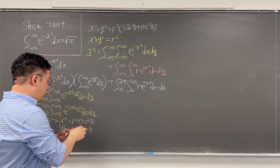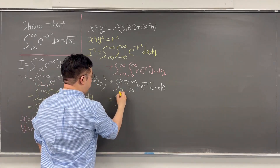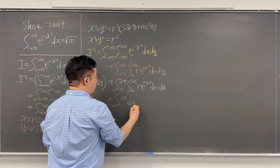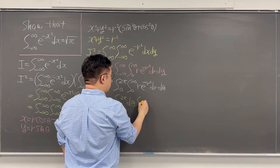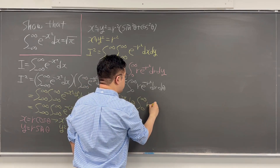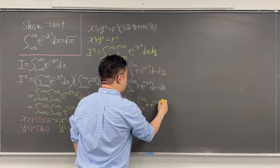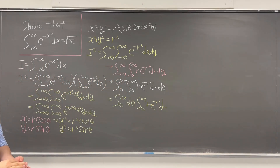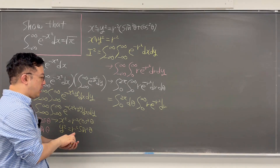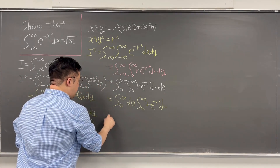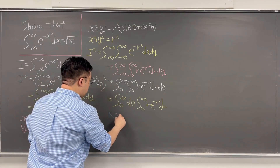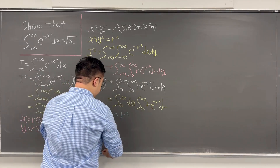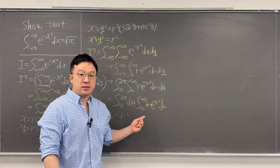We can then rewrite this as the integral from 0 to 2 pi of d theta, times the integral from 0 to infinity of r times e to the power of negative r squared dr. Now let me introduce a substitution: let k equal r squared.